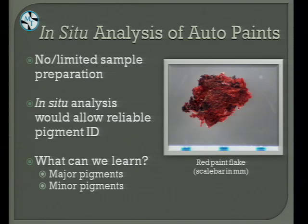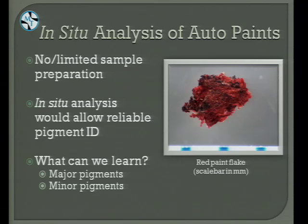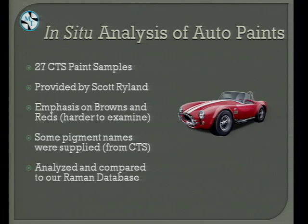Moving on to in-situ analysis of automotive paints. In this case there's limited to no sample prep. We wanted to know what we could learn from automotive paints — such a broad area with so many pigments. Could we find just the major pigments, or could we find minor pigments as well? For this sample set, we had 27 CTS paint samples provided by Scott Ryland. Our emphasis was on the red and brown paints, because these are harder to examine — they usually absorb the laser and produce fluorescence, making it harder to get resolved peaks. Some pigment names were supplied by CTS for comparison. We analyzed all paints against our Raman database, which at the time included around 100 pigments, not all of which were automotive pigments.